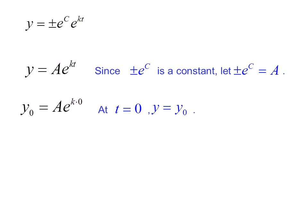At t equals 0, y equals y sub 0, or the initial value of y. So plugging in our initial values, anything to the 0 power is 1, and we get y sub 0 equals a.